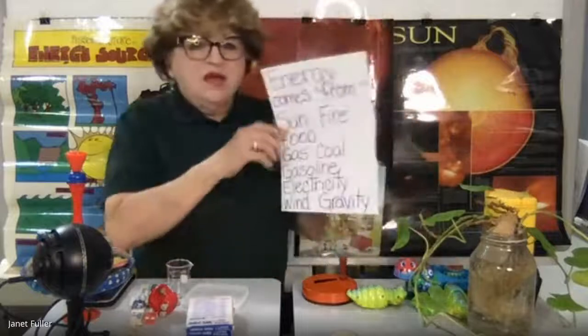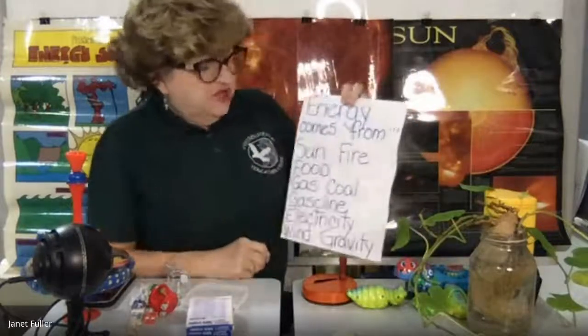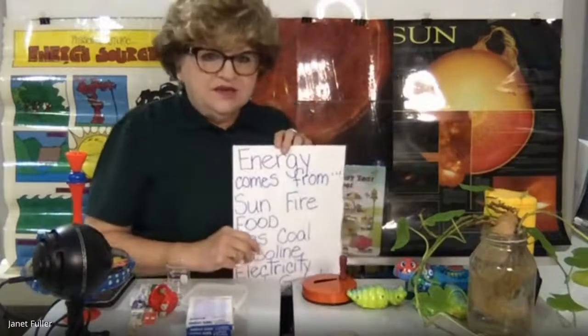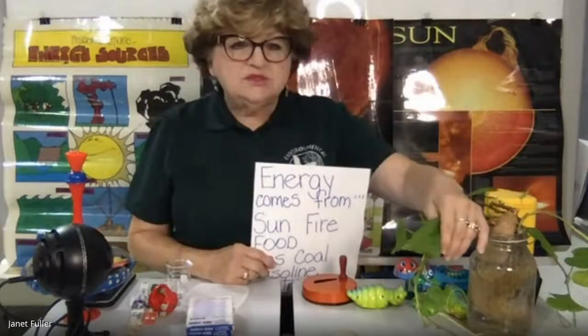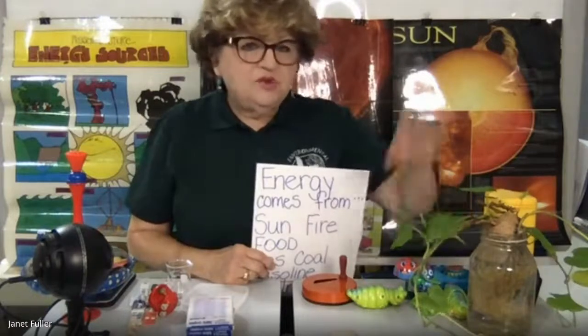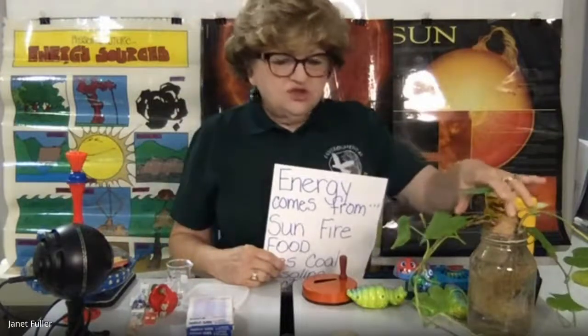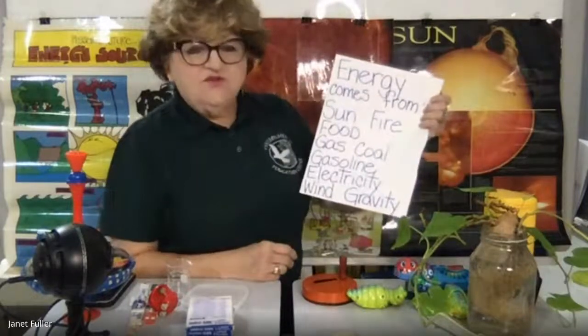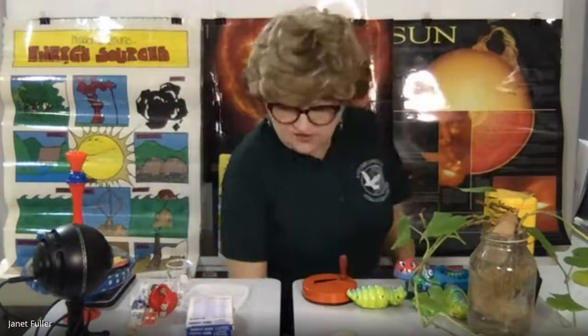Now, what are the different sources of energy? Energy comes primarily from the sun — we get heat energy and light energy from the sun, and that's how plants are able to make food. Plants use light energy from the sun, water, and carbon dioxide to make sugar — that's the food that we eat. Other sources include fire, food, gas, coal, gasoline, diesel fuel, electricity, wind, and gravity.